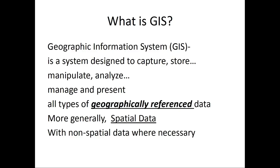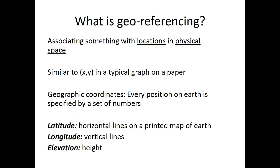This is at least our definition — there are many variations in the way GIS is defined in practice. What's geo-referencing? It is simply associating something with locations in physical space, very similar to the way in a graph on paper you associate every point with a value of X and a value of Y. Now, like you have coordinates on paper, you have geographic coordinates.